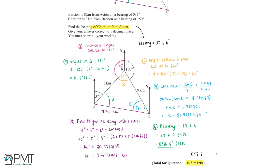This question is worth five marks. We get the first mark for finding that angle B is equal to 67 degrees. The second mark is for using the cosine rule to find that AC is approximately equal to 9.42 kilometers. The third mark is for using the sine rule to find that angle C is approximately equal to 51.4 degrees. The fourth mark is for using the fact that angles in a triangle add up to 180 degrees to find that angle A is equal to 61.5786... degrees. The fifth mark is for using all this information to find the bearing of Cholton from Acton as 37 plus 61.5786, giving 098.6 degrees to one decimal place, earning the full five marks.